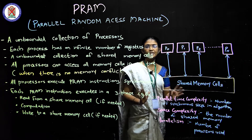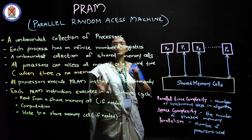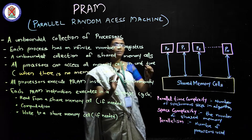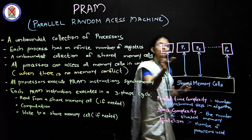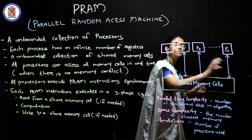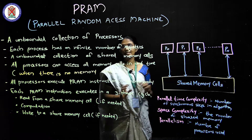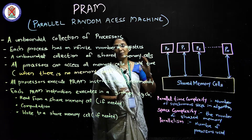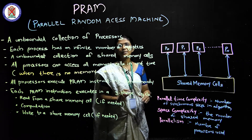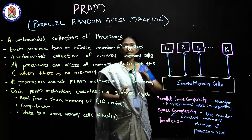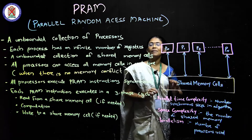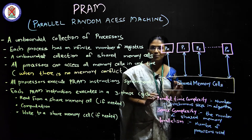The third concept is parallelism — how many processes can be used. Parallelism refers to how many processes can be used to parallelize the computation.